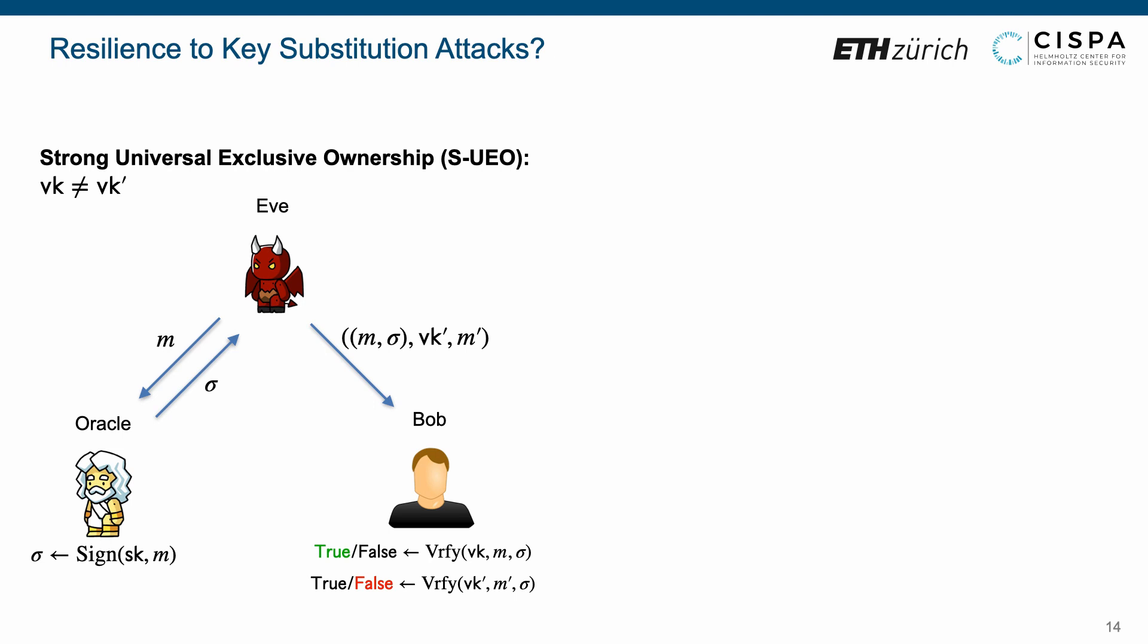In our paper, we introduce three variants. The first one, strong universal exclusive ownership, requires the verification algorithm to output false upon a forged verification key that differs from the original one, a forged message, and an honestly generated message-signature pair.